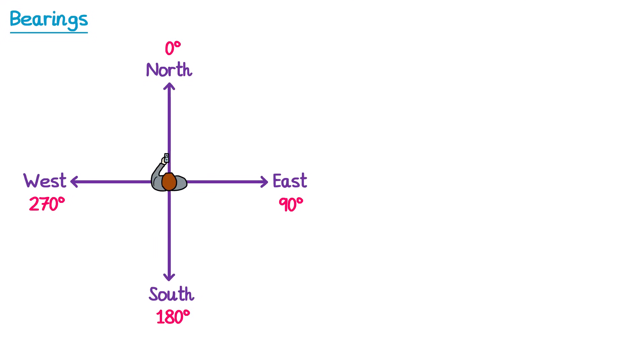So we've assigned an angle to each of these directions, but they're not quite bearings yet. There are three rules that you must know about bearings. The first rule is that bearings always have three figures. You can see at the moment that east here has two figures and north just has one figure. So we're going to use some extra zeros to make sure that they always have three figures.